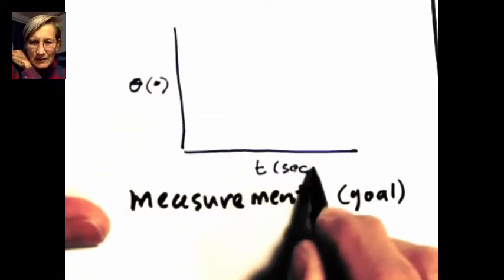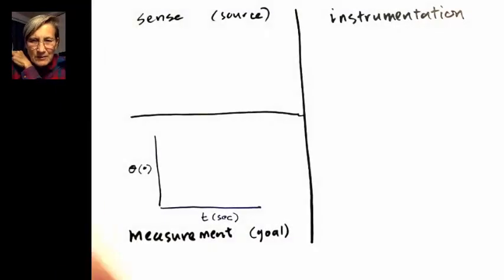So our goal is to understand the relationship, but what is the sensor that we use to take that measurement, and what does the instrumentation look like?